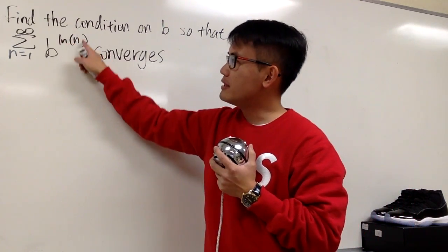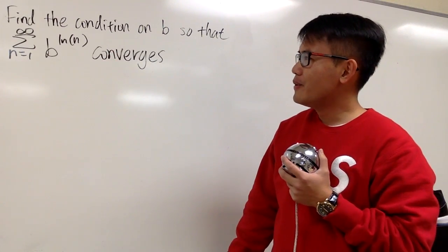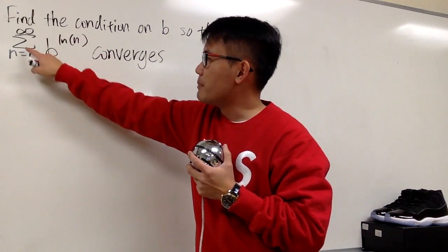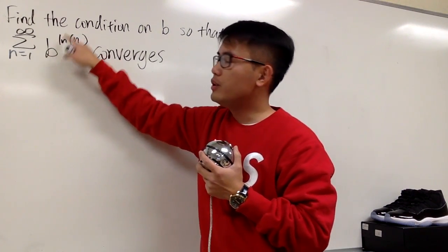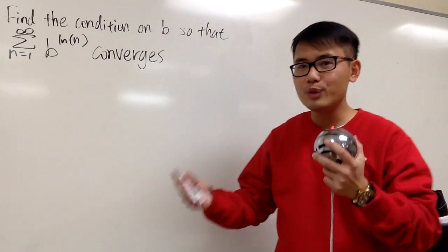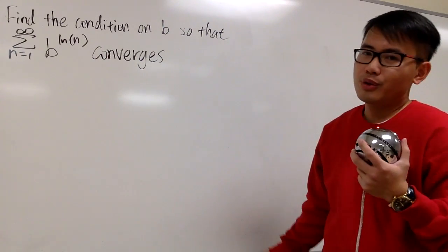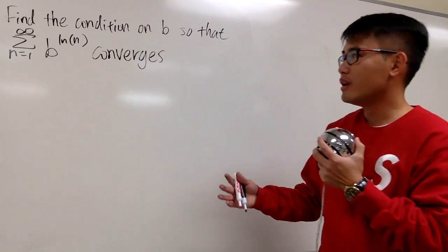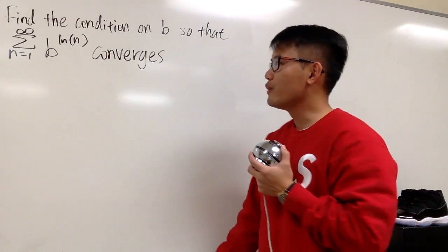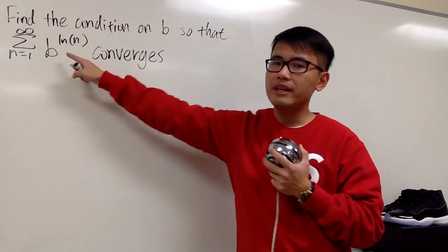The power here is the natural log of n, and we don't know about this. Imagine if the power is only n — the sum when n goes from 1 to infinity of b to the nth power. That's pretty much the geometric series, and we know how to deal with that much better. For this one, we don't know it too well, and hopefully we can make some connection between things we know from the past and this new thing, and find all possible values for b to make it convergent.